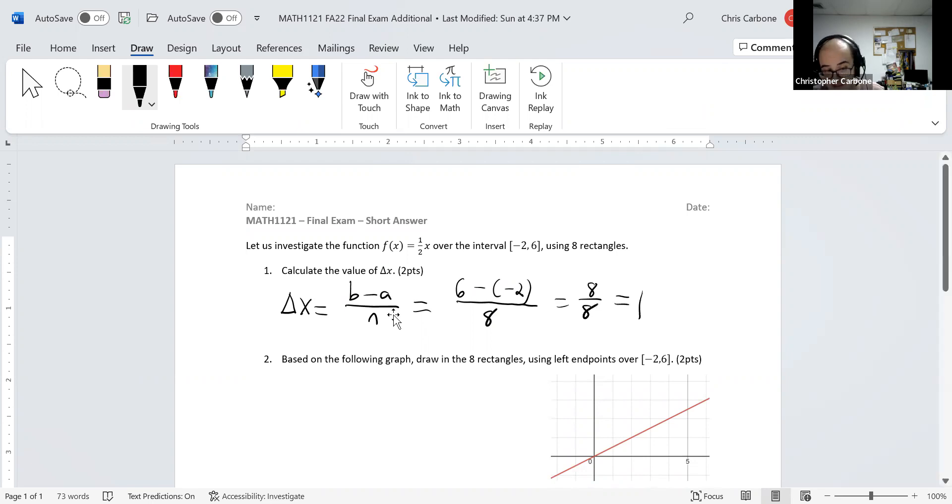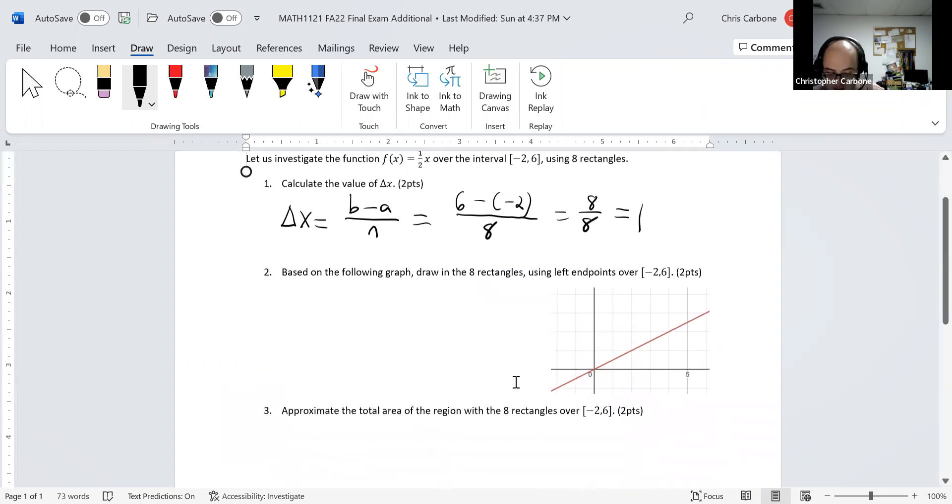And based on that, and the graph I have here on the second part of this, using left endpoints, we want to draw in the 8 rectangles. So, drawing those in, they will look something like this. We have the first left endpoint, the next one will be about here. At that point, this one is right on the x-axis.